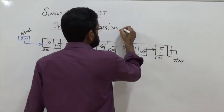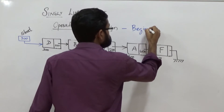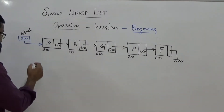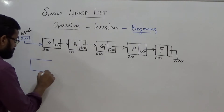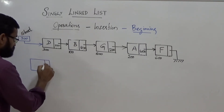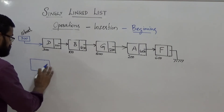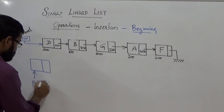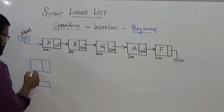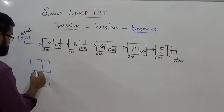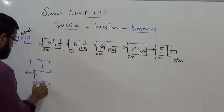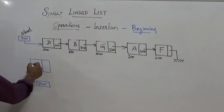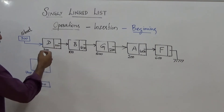First we are dealing with insertion at the beginning. To perform insertion of a new node at the beginning, first we have to create a new node. In order to create a node, we take a pointer P and dynamically allocate memory. The corresponding base address of the new node — let it be 700 — gets loaded in P. We then initialize the node: the data part will get initialized with, let it be N.